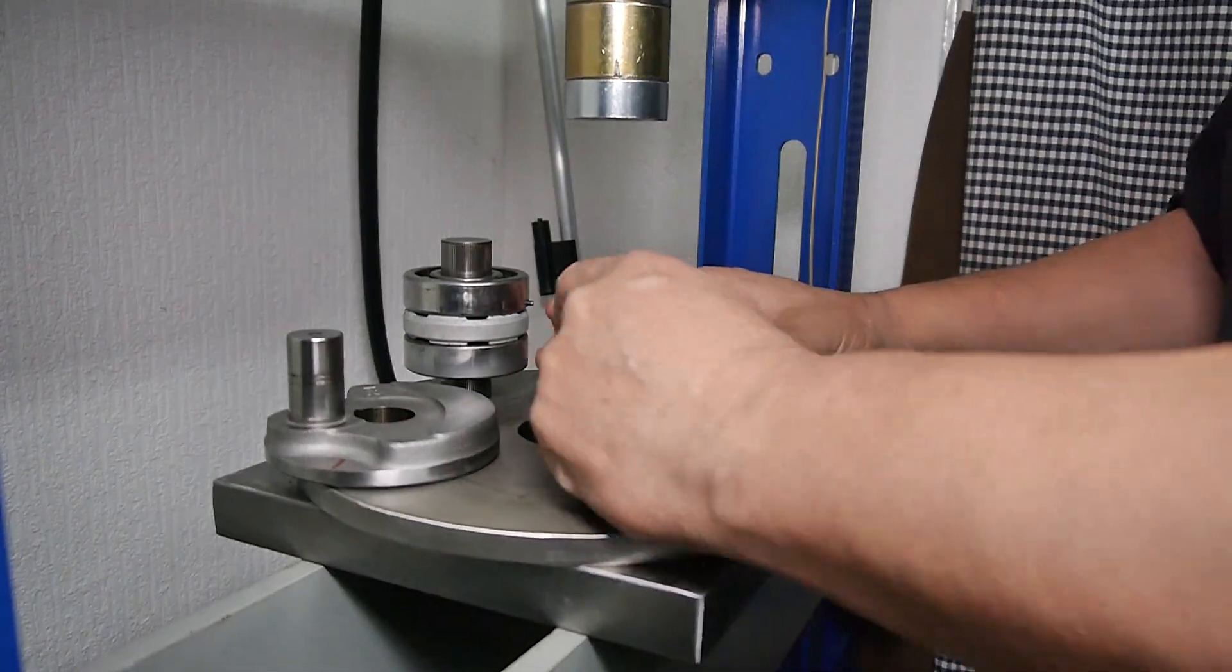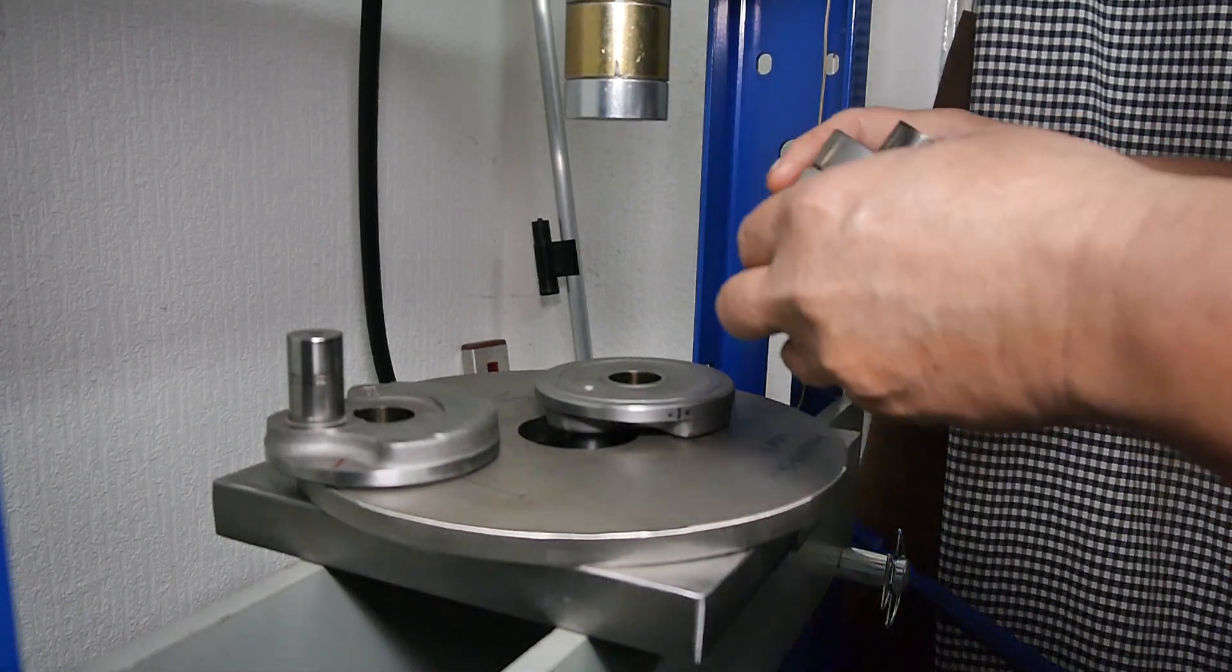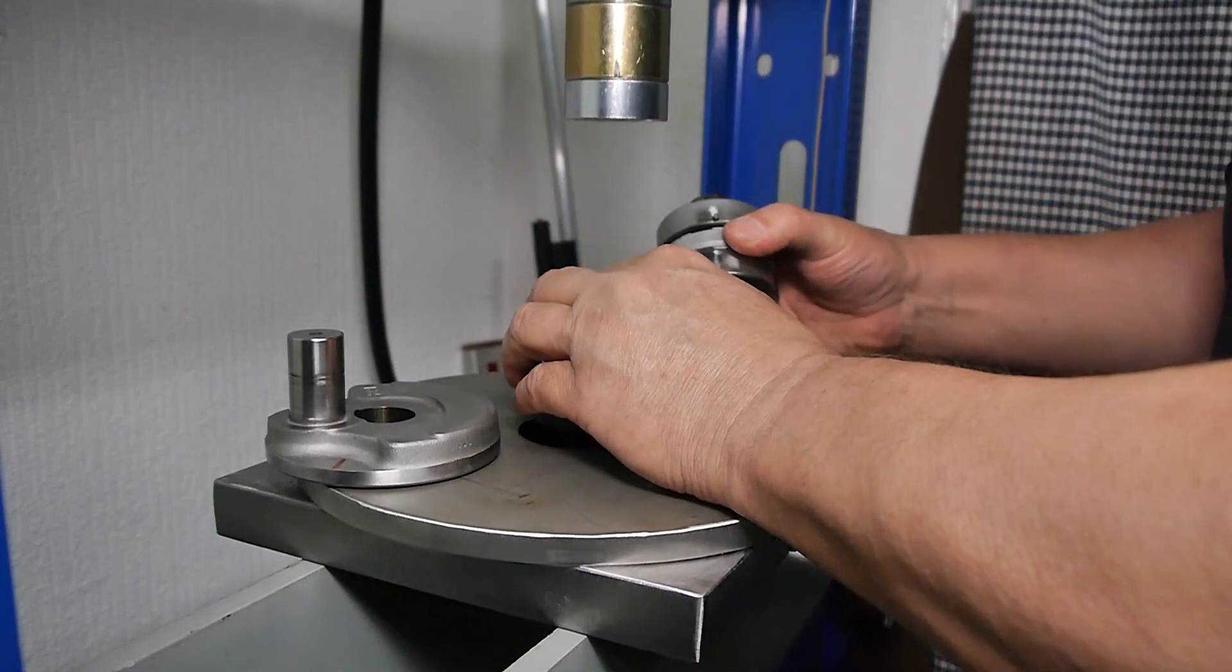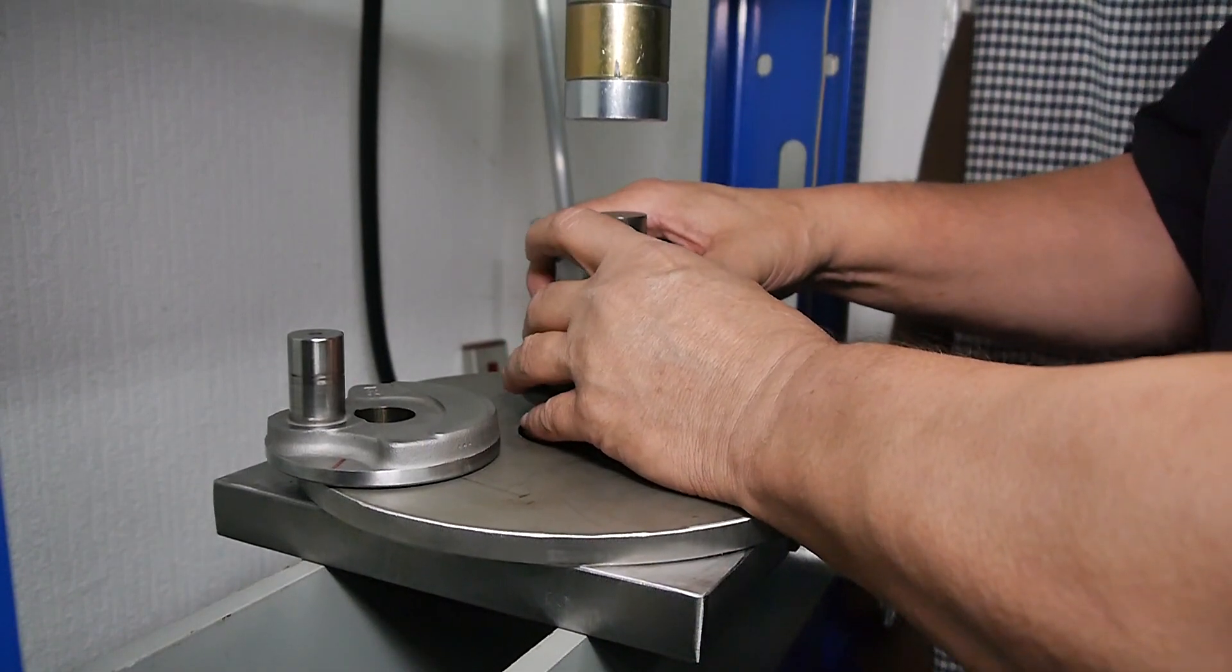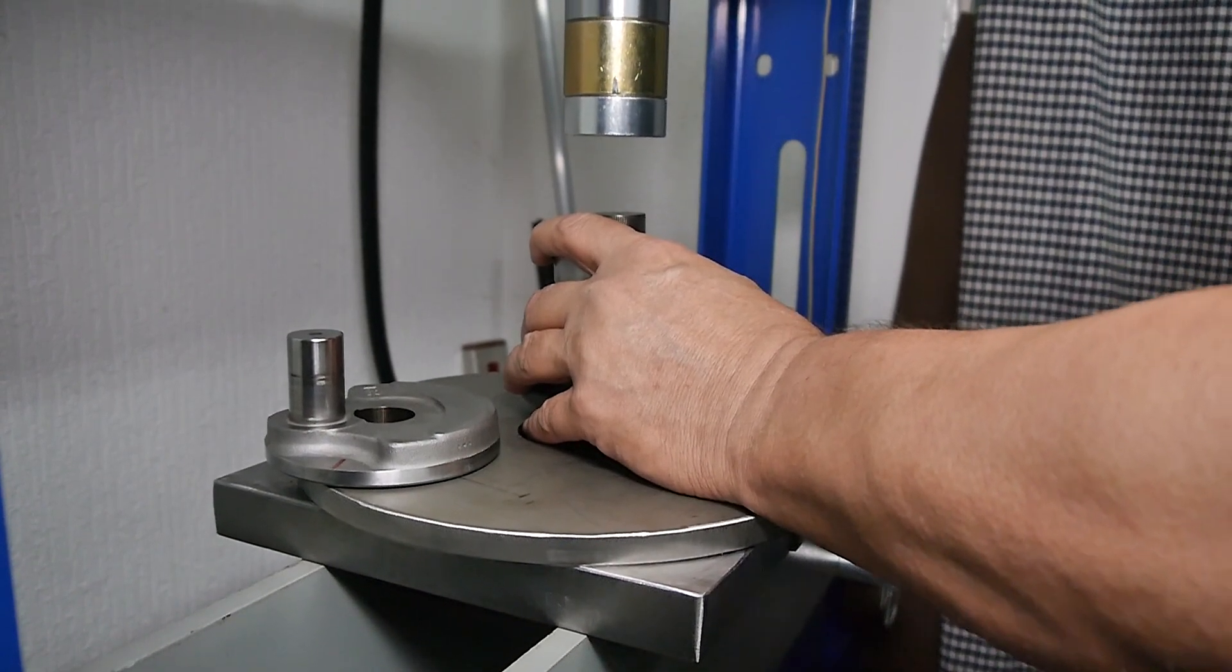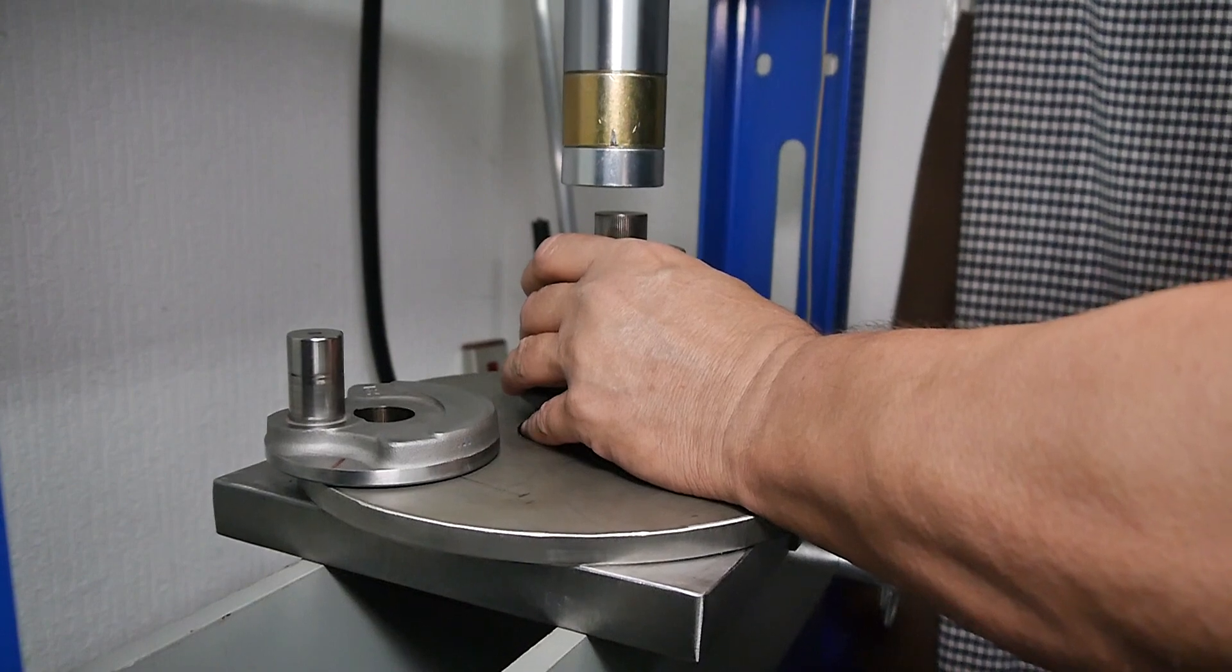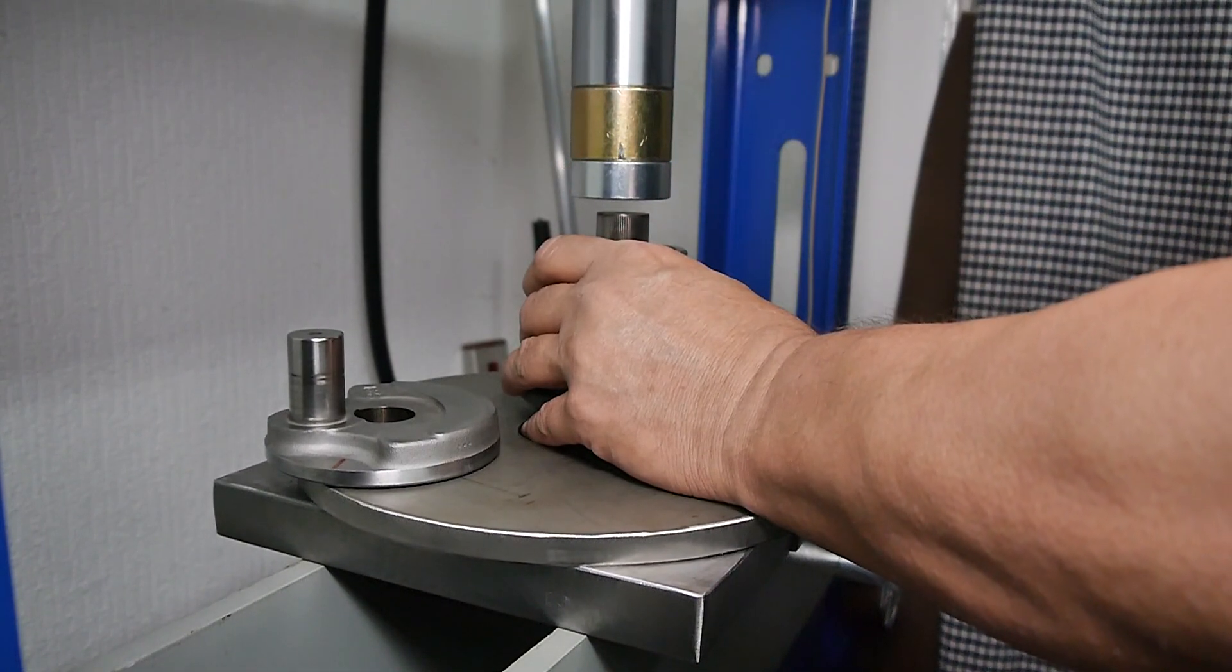So with that shim underneath there, we'll press in the first half of the center pin into that center web, making sure that shim's in place underneath, perfectly square. So we'll put that one in first and get it as close as you can vertically.